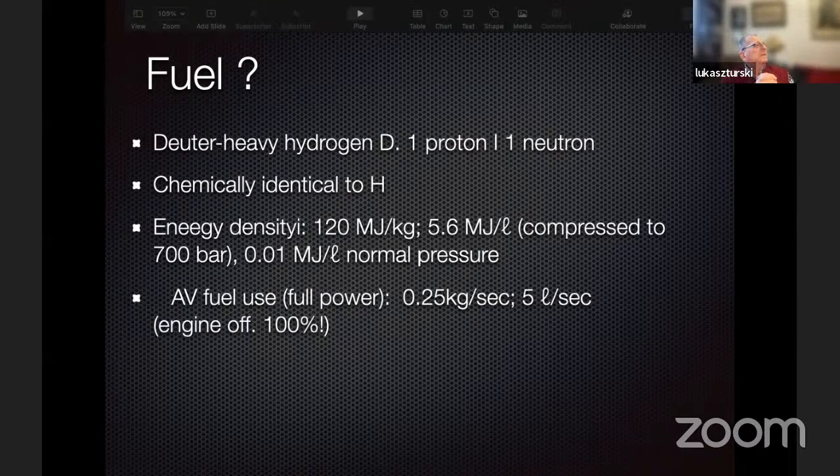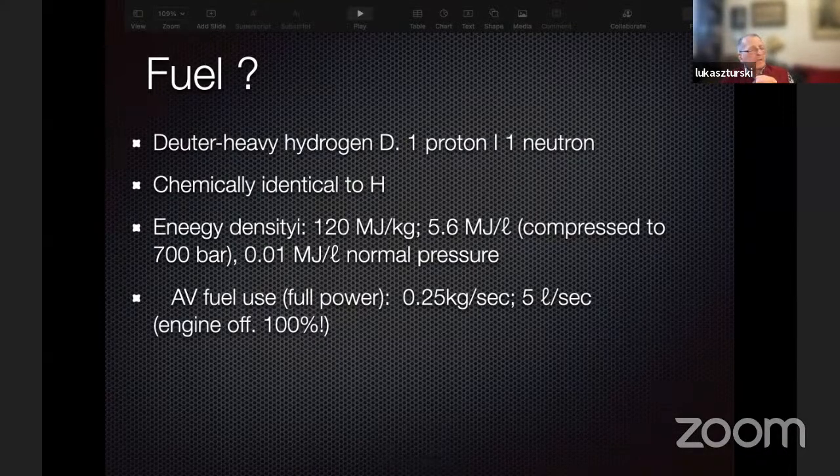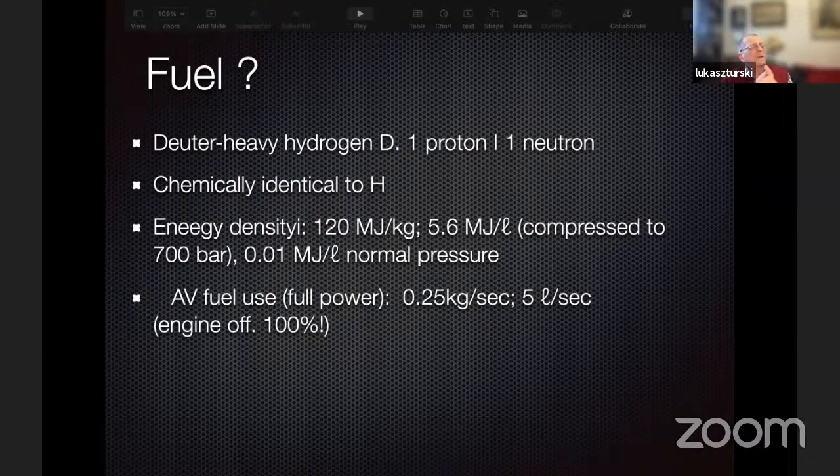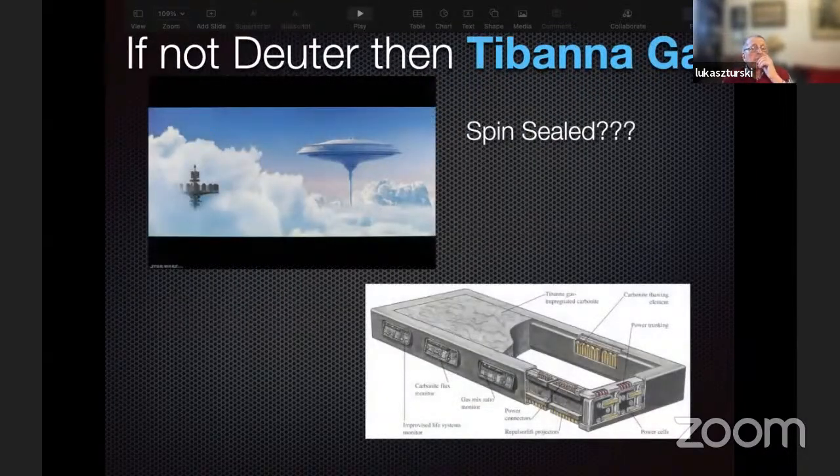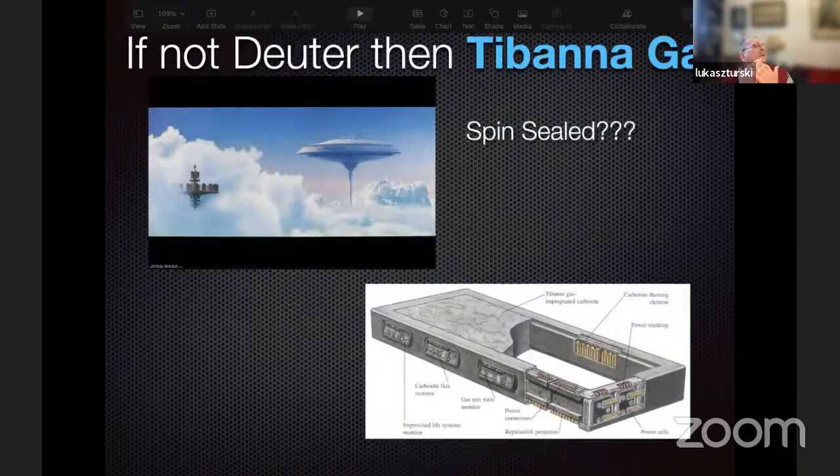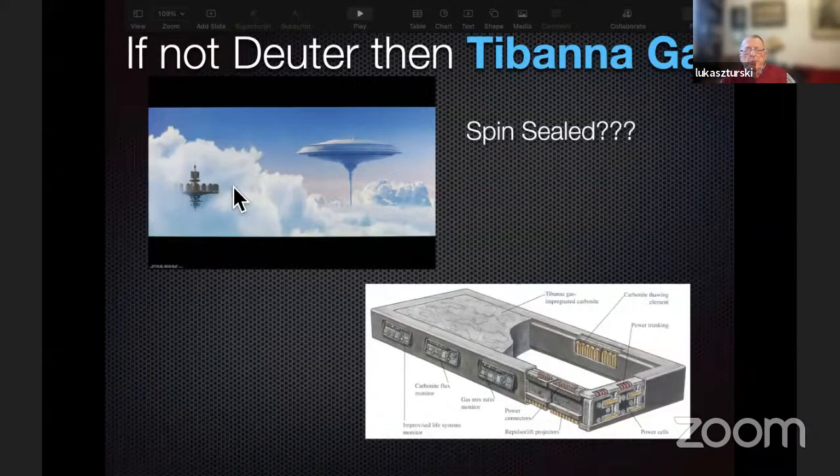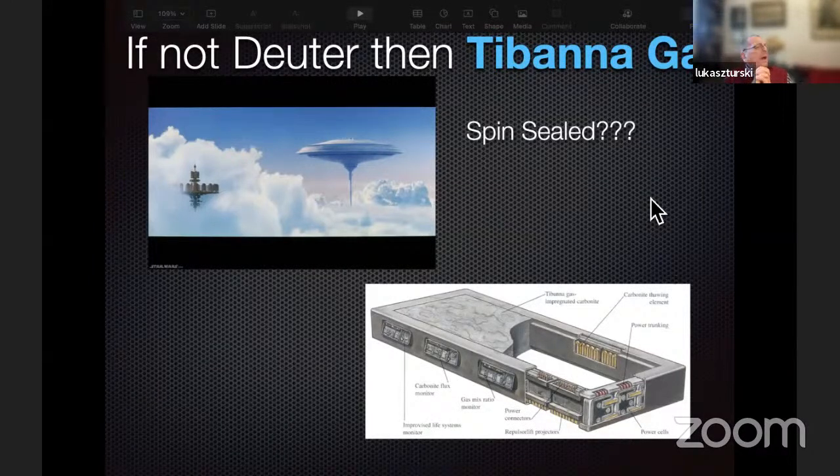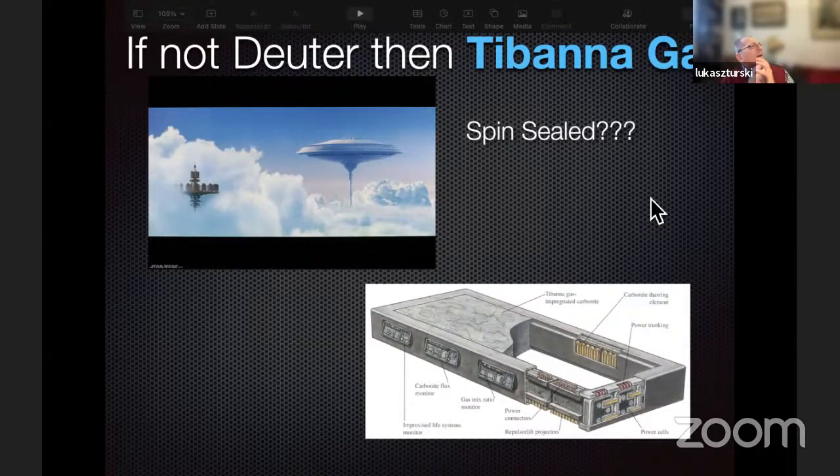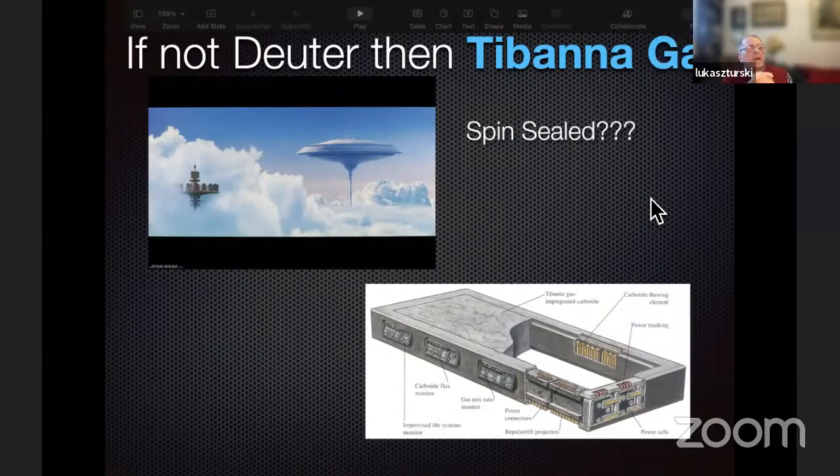That is the scale of G forces we use in our everyday life. So let's talk about deuterium. Deuterium is actually heavy hydrogen, having just in the nucleus, in addition to the proton, one neutron. It is chemically absolutely identical to hydrogen. There is no chemical difference between those two isotopes of hydrogen.